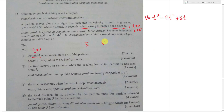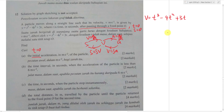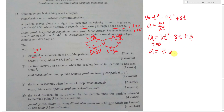Remember: differentiate s to get v, differentiate v to get a; integrate a to get v, integrate v to get s. Since I have v and want a, I differentiate: a = dv/dt = 3t² − 8t + 3. For initial acceleration, t = 0: a = 0 − 0 + 3 = 3 m/s². That's 2 marks — very easy.